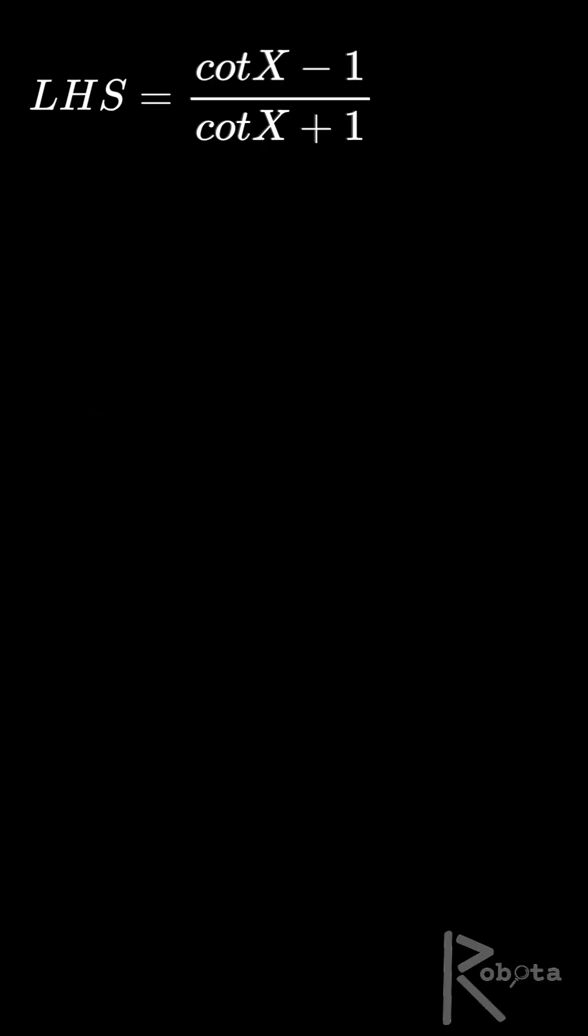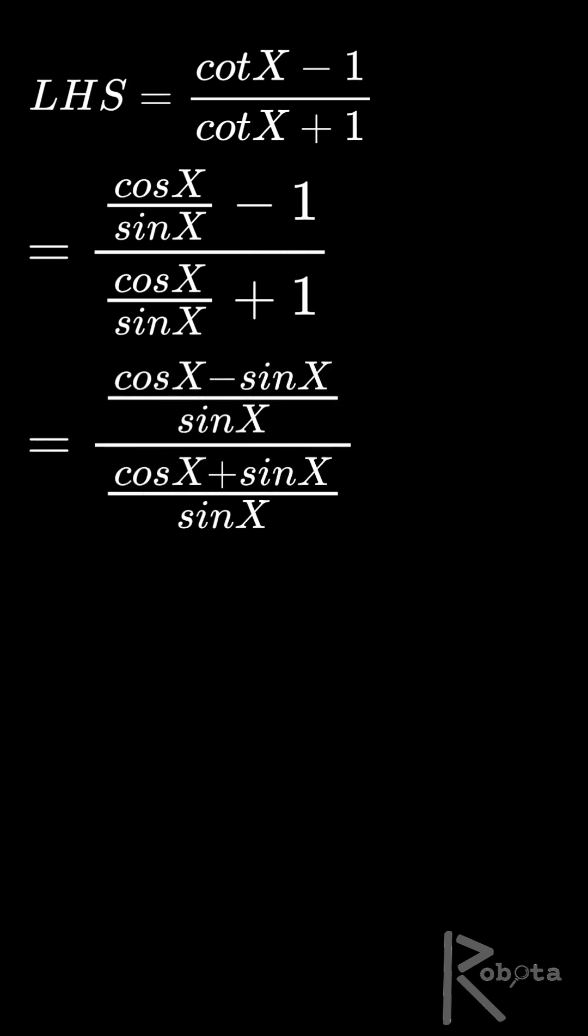Use the left-hand side of the identity and replace both cot x with cos x over sine x. Now clear the complex fraction by multiplying top and bottom by the same non-zero factor, which is sine x.